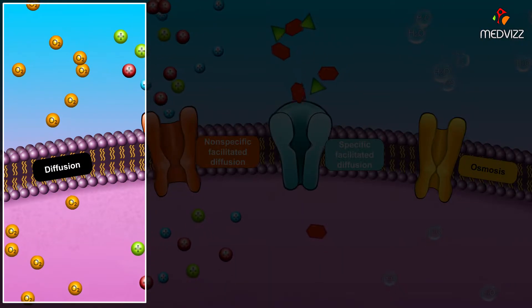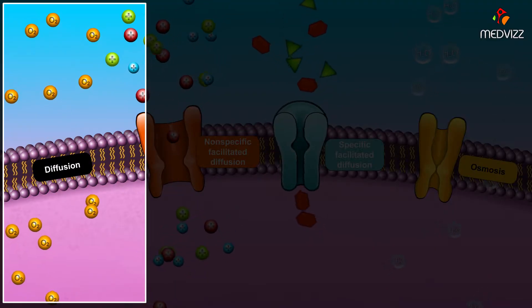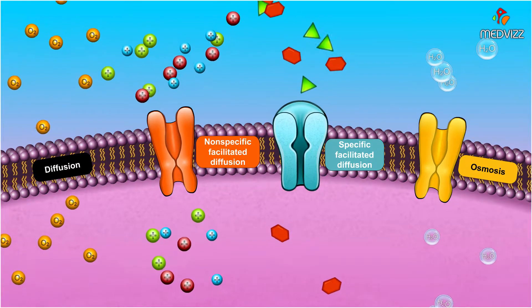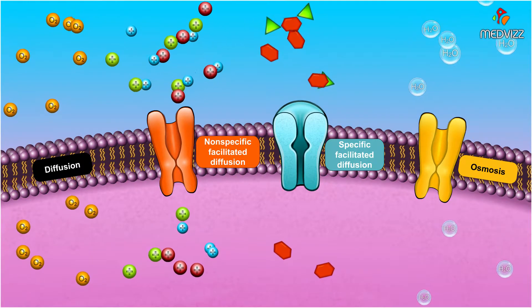Simple diffusion does not require special membrane proteins for movement of molecules. However, other types of diffusion do require such proteins for the transport of molecules.